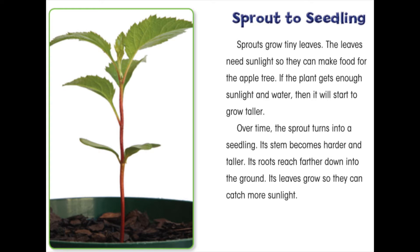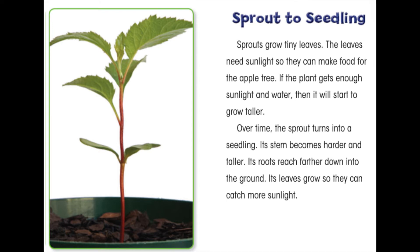If the plant gets enough sunlight and water then it will start to grow taller. Over time the sprout turns into a seedling. Its stem becomes harder and taller. Its roots reach farther down into the ground. Its leaves grow so they can catch more sunlight.